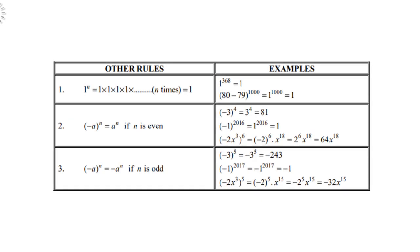Let's look at some other rules. 1 to the power n equals 1 times 1 times 1, n times — so 1 to any power always equals 1. Even 1 to the power 368 becomes 1. For instance, 80 minus 79 is 1, and 1 to the power 1000 is still 1.